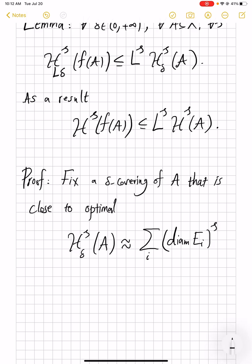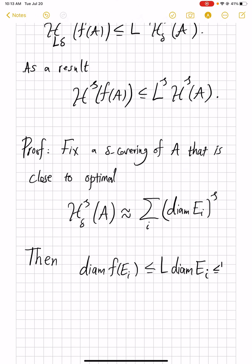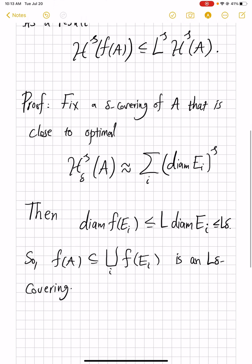Then, by the Lipschitz condition, diameter of f(E_i) will be less than or equal to L times diameter of E_i, just by definition of diameter. And that is less than L delta. So f(A) is contained in union of f(E_i)'s, which is an L delta covering.